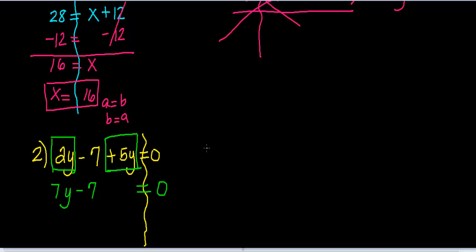So I can do my do-undo table if you want. You don't have to, but it helps. What is going on with this variable? Well, y is being multiplied by 7. And then I'm subtracting 7. So I switch the numbers and I switch operations. If I'm subtracting 7, the first thing I'm going to do is add 7. And if I'm multiplying by 7, I'm going to divide by 7.